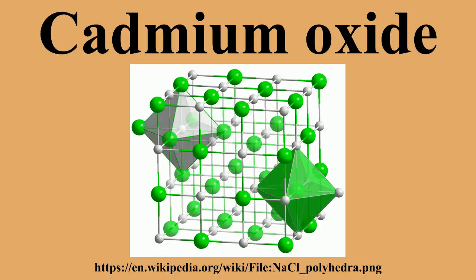Production and structure: Since cadmium compounds are often found in association with zinc, cadmium oxide is a common by-product of zinc refining. It is produced by burning elemental cadmium in air. Pyrolysis of other cadmium compounds, such as the nitrate or carbonate, also affords this oxide. When pure, it is red, but cadmium oxide is unusual in being available in many differing colors due to its tendency to form defect structures resulting from anion vacancies. Cadmium oxide is prepared commercially by oxidizing cadmium vapor in air.